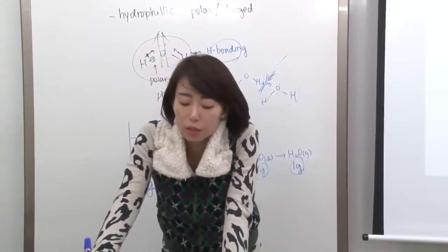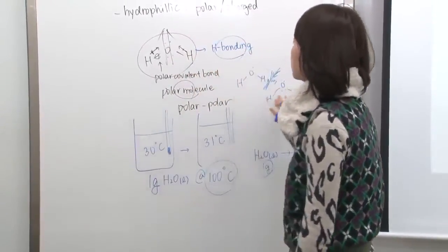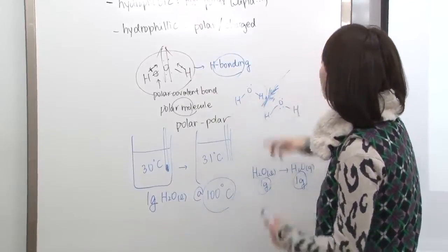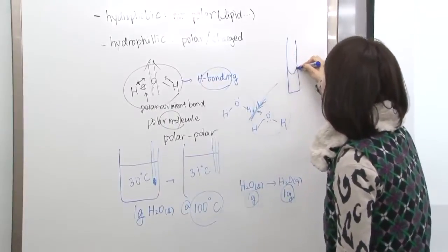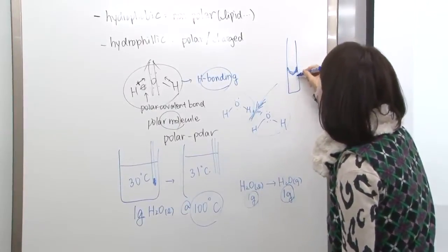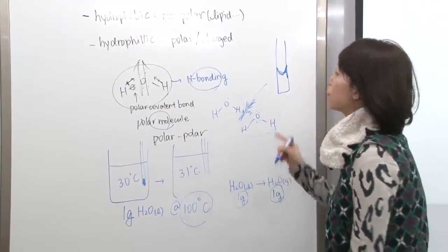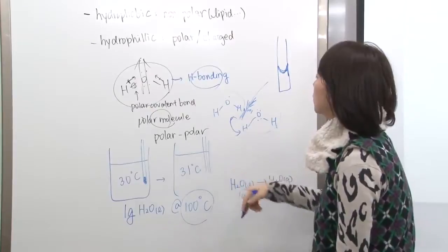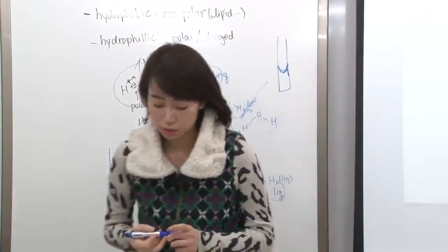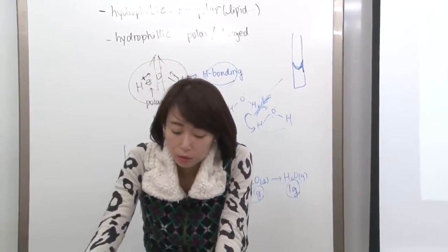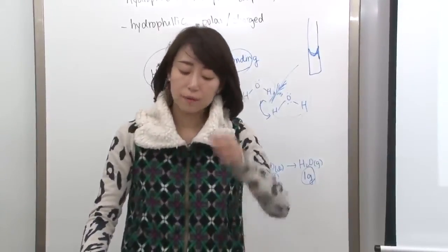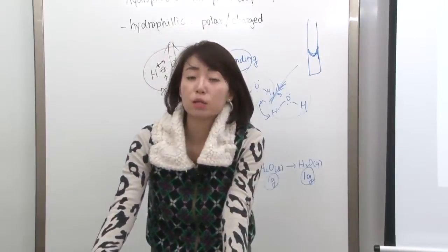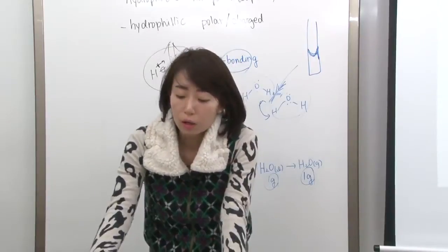Number three: water has high adhesion properties. Since water has strong hydrogen bonding, it is cohesive to other water molecules and adhesive to other surfaces. For example, in a glass tube, the water meniscus curves because of adhesion between the container wall and water molecules. Number four: water is a universal solvent — most of the solvent in our body, in our cells, is water.